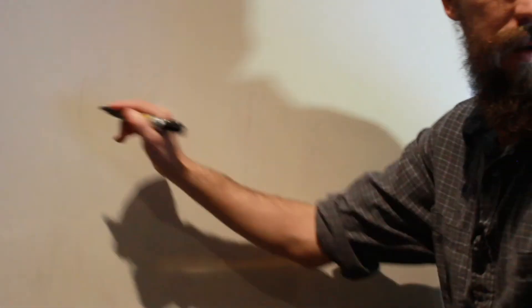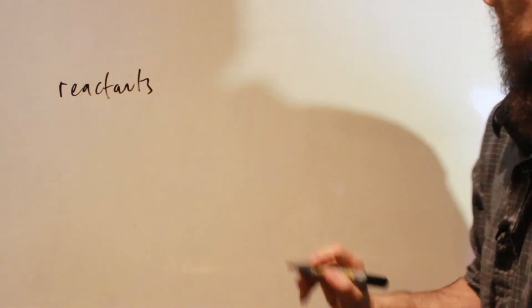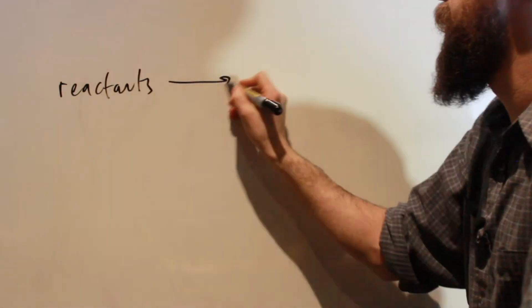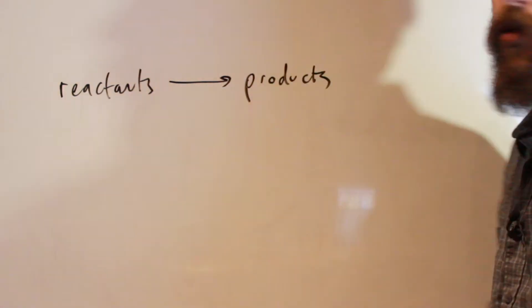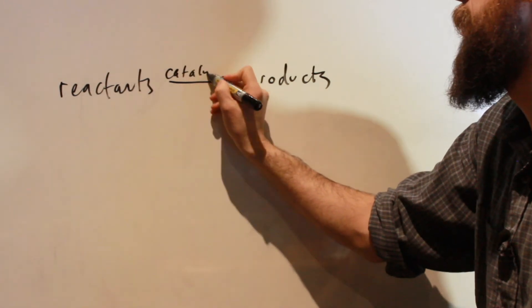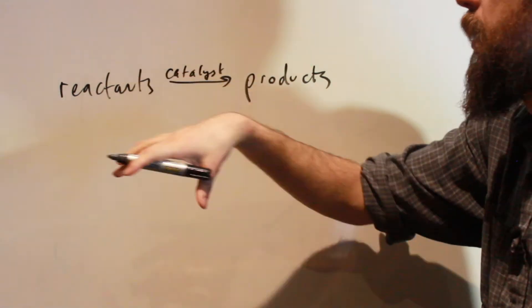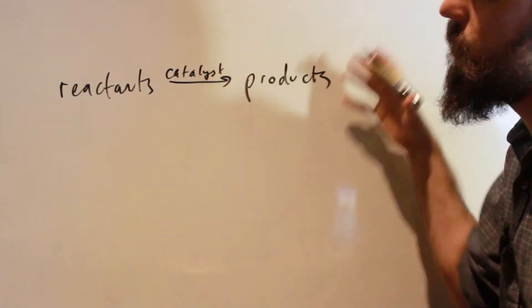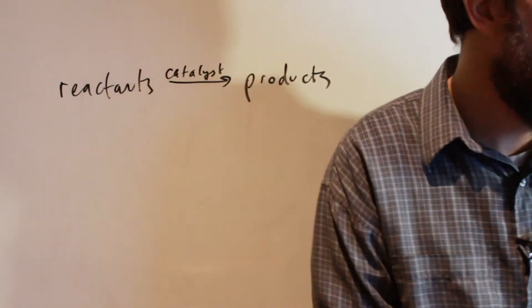So if we have a reaction — let's say we have some sort of reactants forming some sort of products — when you're representing the catalyst, you usually write it above the reaction arrow. This shows that it's not being used up; it's still involved in the reaction process, but it's separate from the reactants.